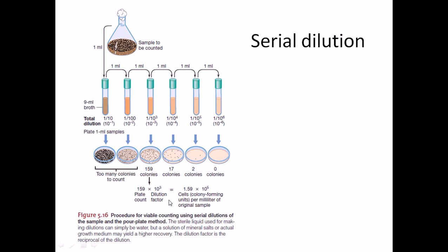The most important first step in serial dilution is to prepare the mixture. We take soil — let's say one gram of soil — and put it into nine milliliters of broth, either nutrient broth or Luria broth. Remember, the broth and the container where we put the soil must be sterile. Sterility is maintained throughout the process.